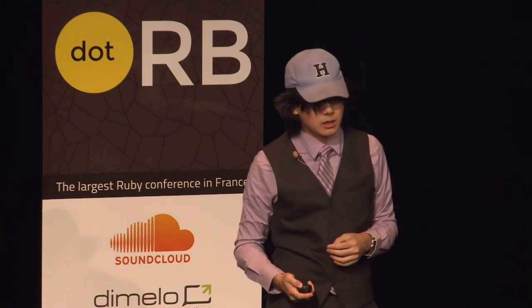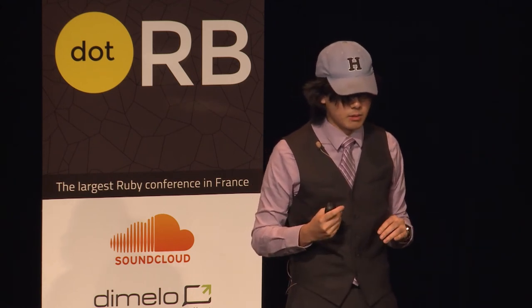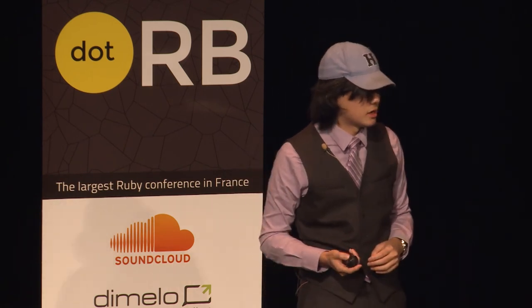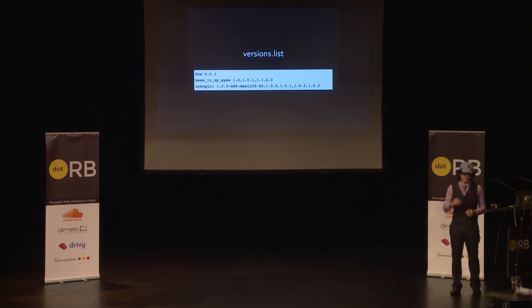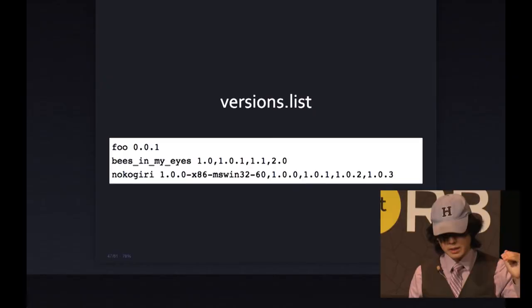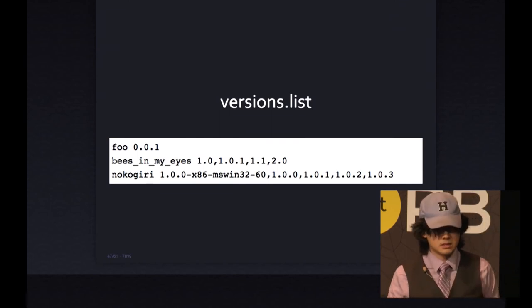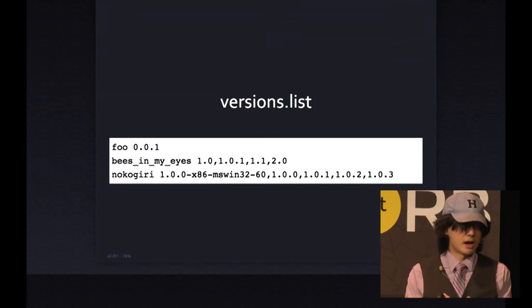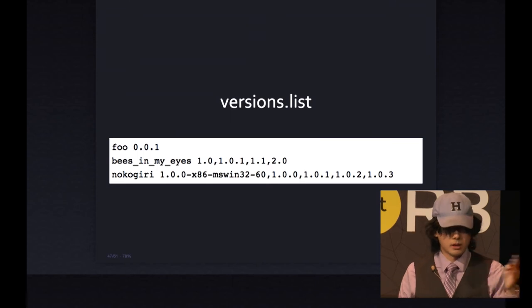Evan Phoenix and James Tucker have had a lot of input on a new index format we're hoping will solve these issues. The format is composed of three main parts. First, a names.list — a simple plain text file with a new line for every single gem. Second, a versions.list — every gem on a new line with every version ever released (that isn't yanked) listed to the right, including platform variants like 'x86-mswin32' combined with a version such as 1.0.0 for Nokogiri.